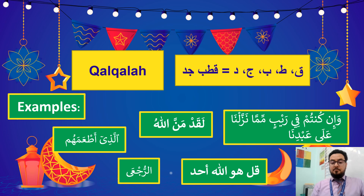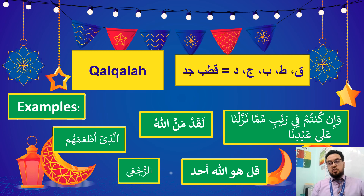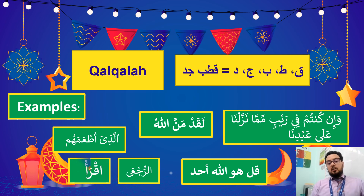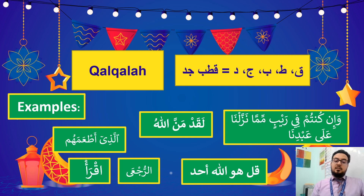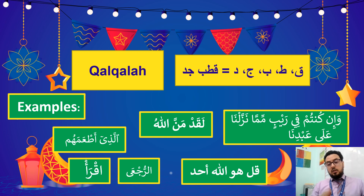أعوذ بالله من الشيطان الرجيم. إِنَّ إِلَىٰ رَبِّكَ الرُّجْعَىٰ — the Jim letter in Arabic is similar to J in English, so الرجع has Qalqalah. And finally, اقرأ — اقرأ بِاسْمِ رَبِّكَ الَّذِي خَلَقَ — even at the end, خلق has Qalqalah on the Qaf only because we stopped. If we continue, there is no Qalqalah.